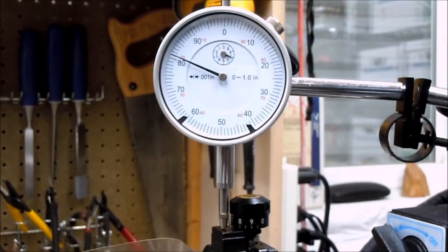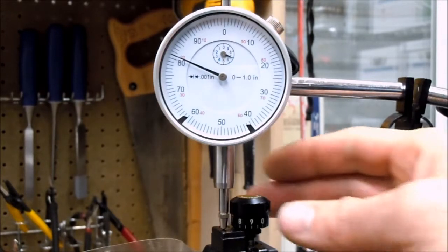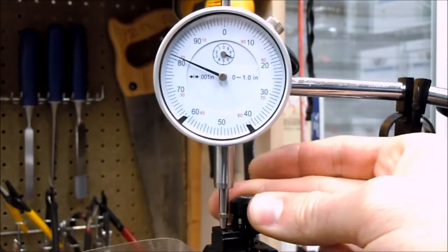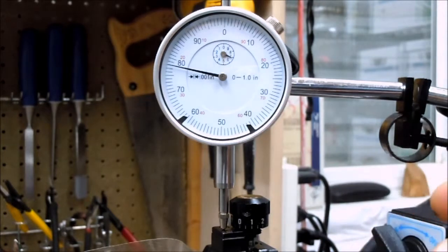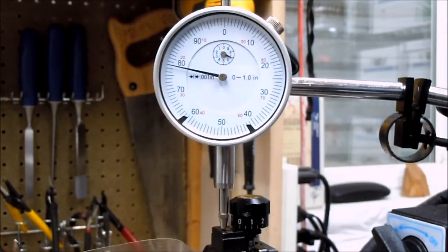First of all let's see how much is one click on the sight. Currently it shows 81. If I move it a couple clicks down it now shows 78. That means that one click is 15 ten-thousandths of an inch.